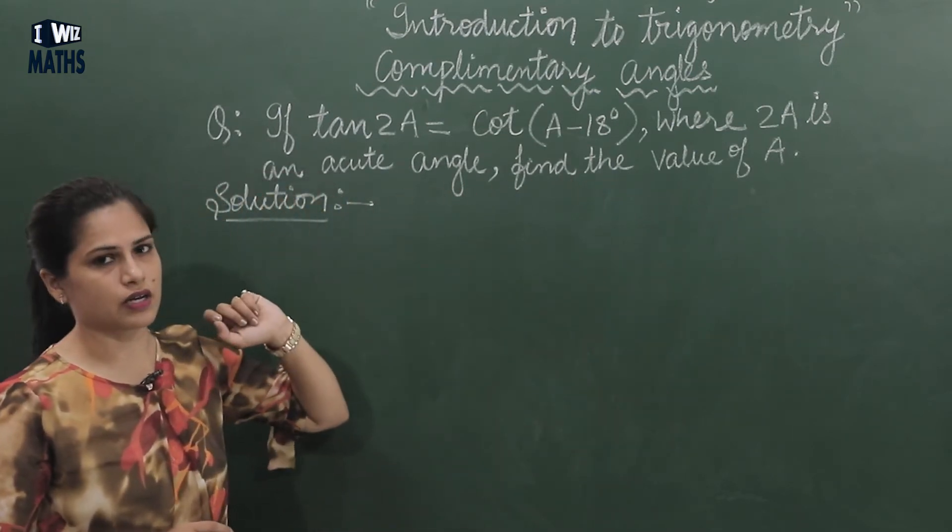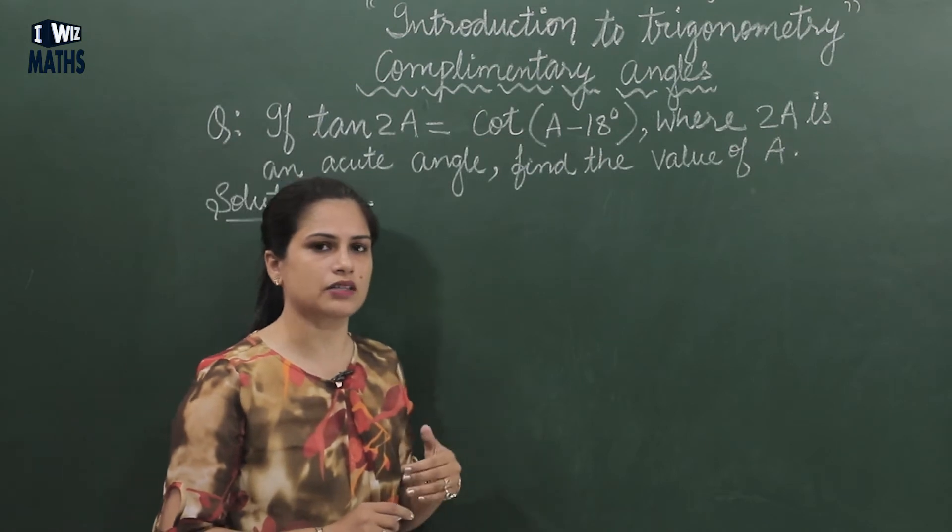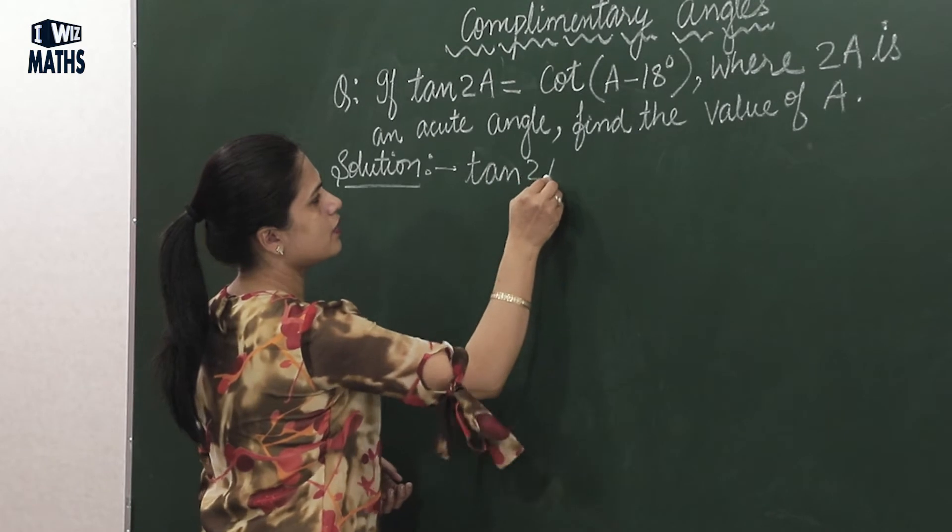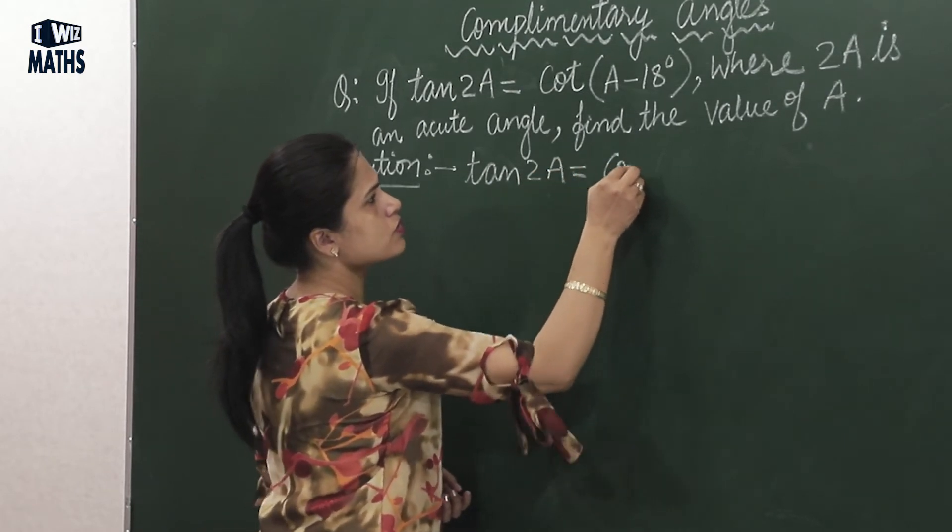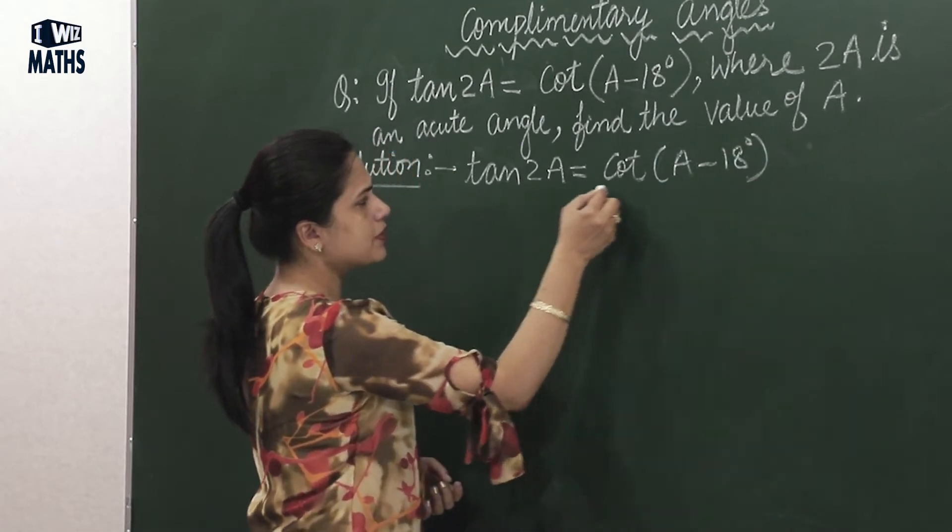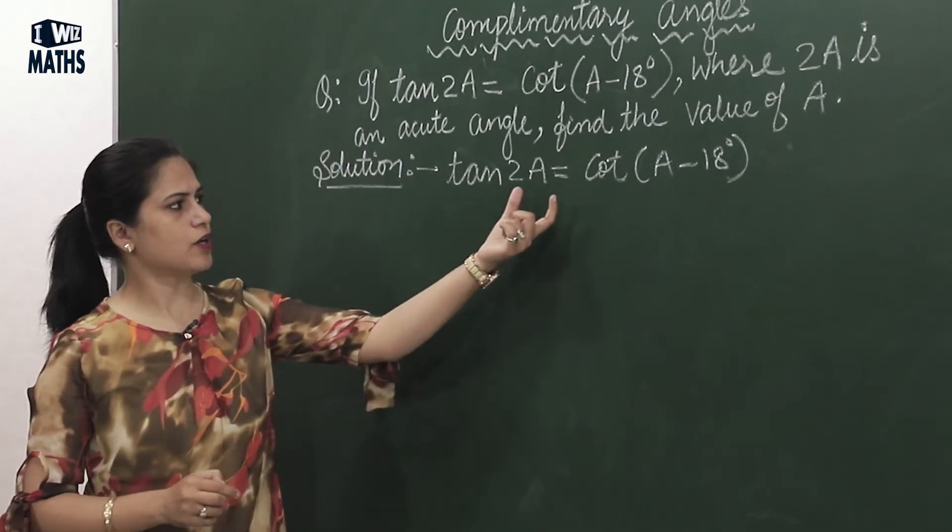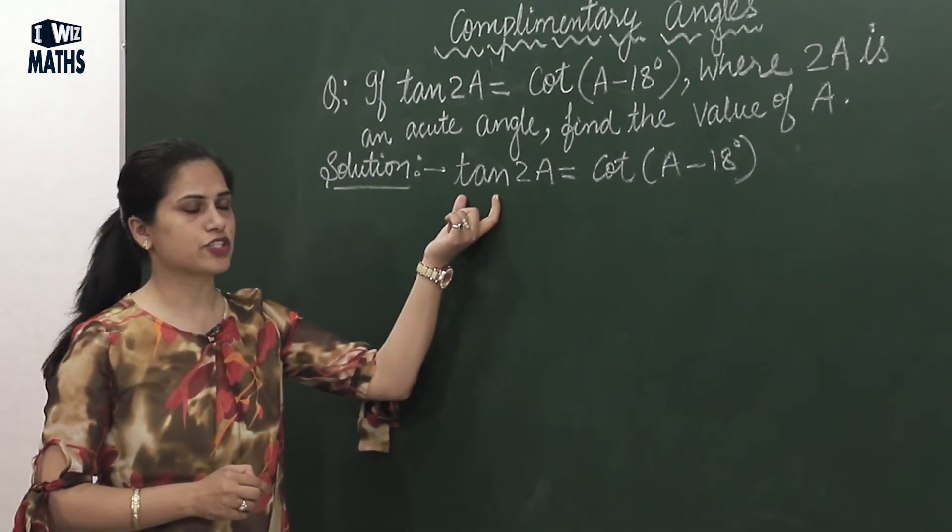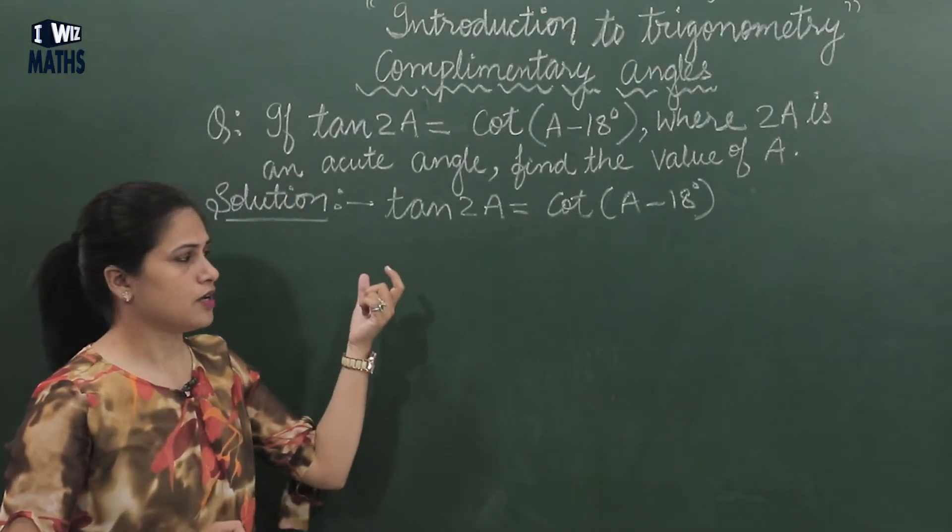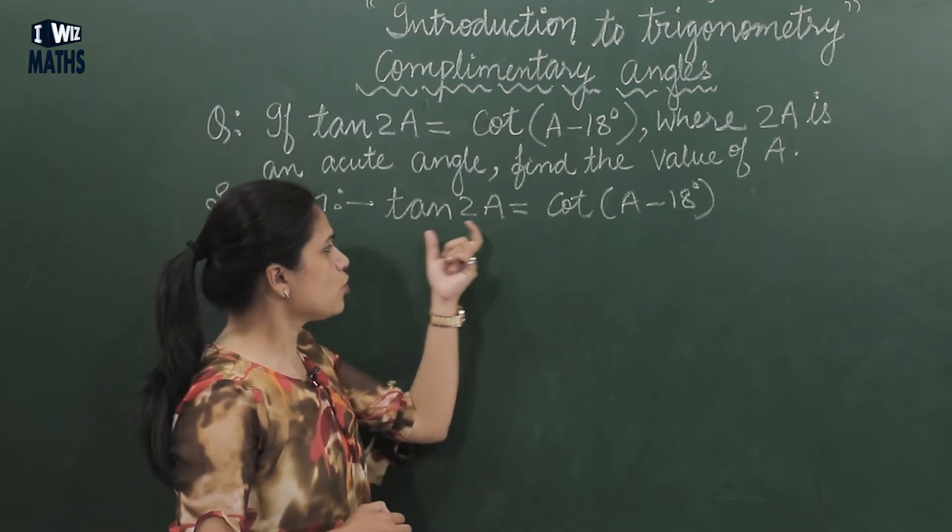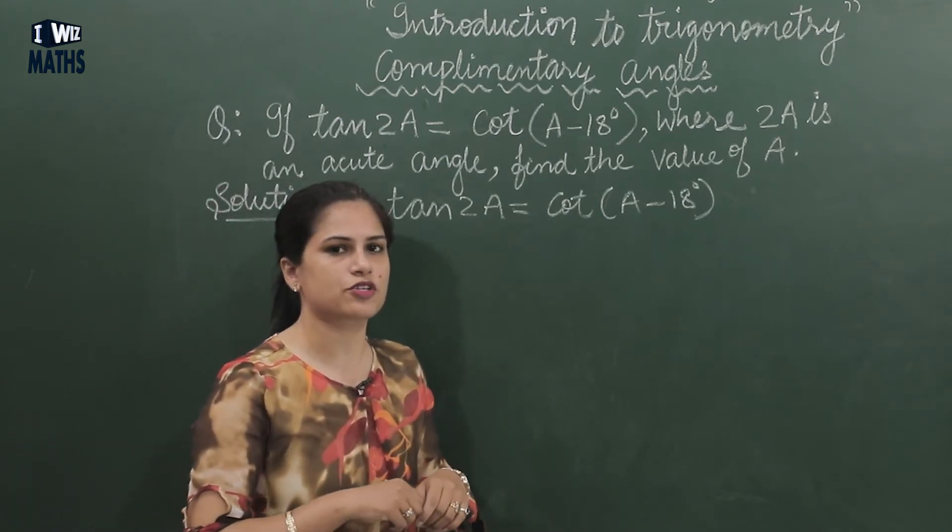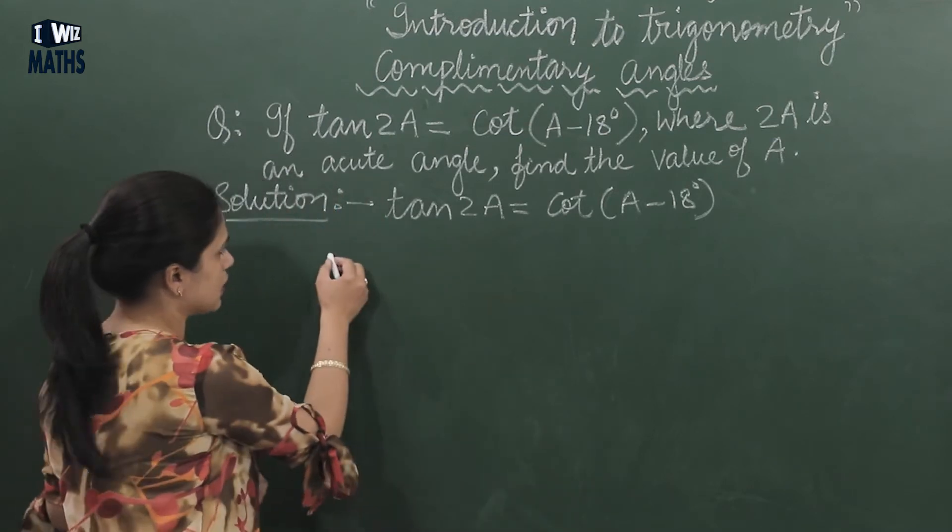We need to find the value of A here. So whenever any question comes to us, first we'll write its given. Given is tan 2A equals cot(A - 18°). Now carefully see here that on this side, on the LHS side, tangent is given, on RHS cot is given. Can these two be equal? First see, both are complementary functions. Two complementary functions become equal when their angles are also complementary.